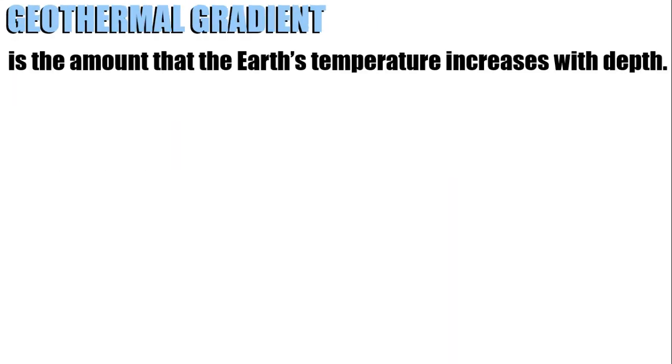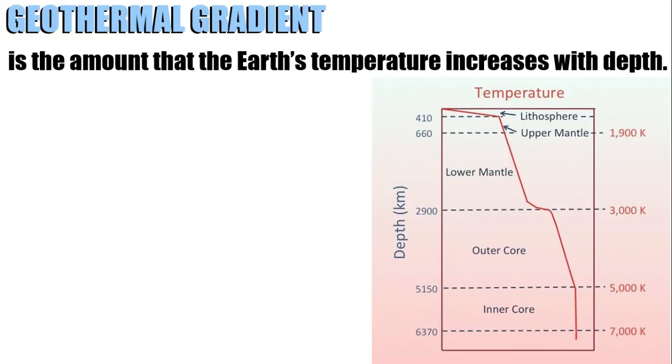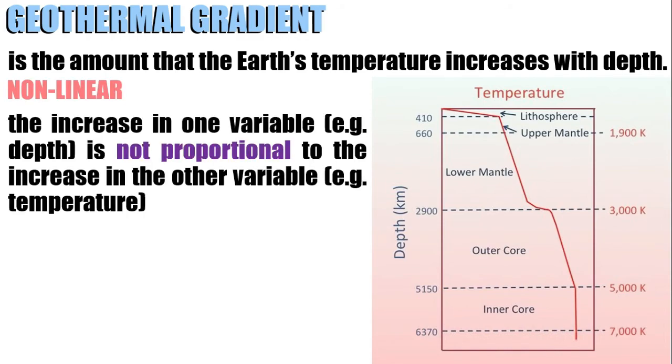A factor to consider is the geothermal gradient. It is the amount that the earth's temperature increases with depth. As you can see, it is non-linear. This means that the increase in one variable is not proportional to the increase in the other variable. In this case, depth versus temperature. The temperature gradient in the crust is around 25 degrees Celsius per kilometer.